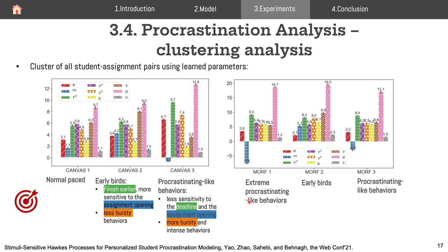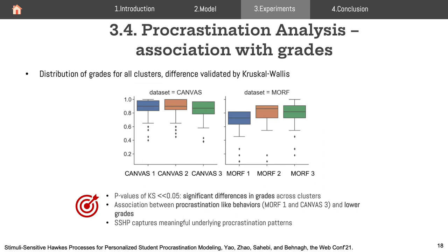Similarly, in Morph we also identify three clusters: procrastination-like behaviors, early birds, and more extreme procrastinating-like behaviors. We then examine the distribution of student grades across all clusters. The main conclusion is that grades across clusters are significantly different, validated by Kruskal-Wallis tests, and that procrastination-like behaviors are associated with lower grades. This suggests our model captures meaningful underlying procrastination patterns and their association with student performance.